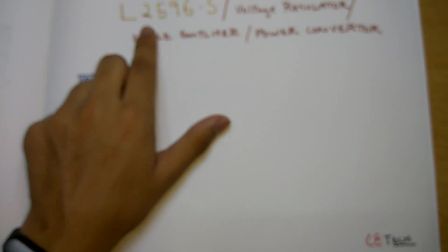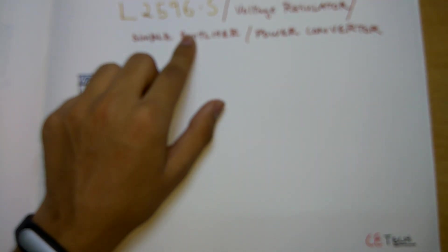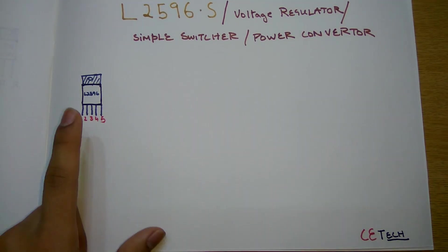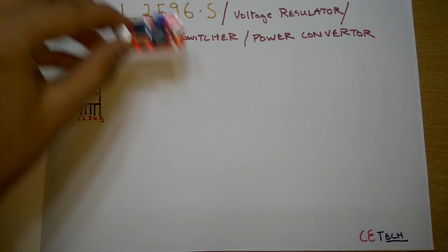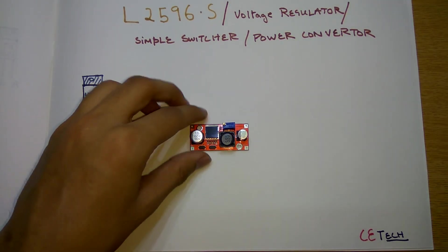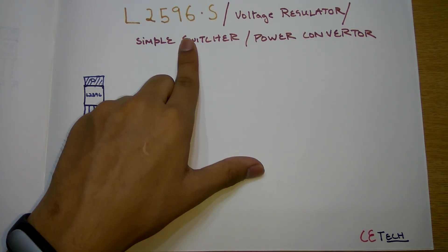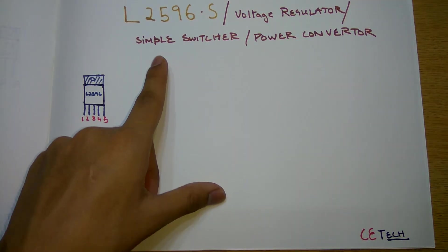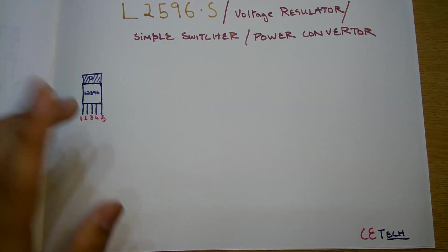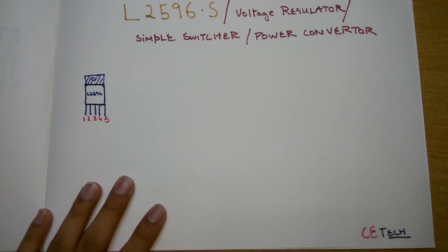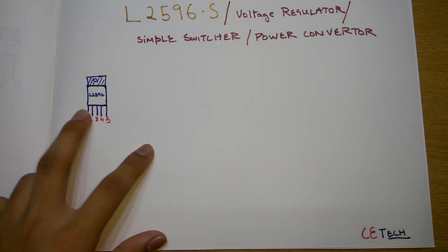So firstly, taking a look at the L2596. That's the L2596 which is used in these types of DC buck converters. This is also stated as a voltage regulator, simple switcher, power converter, and whatnot.